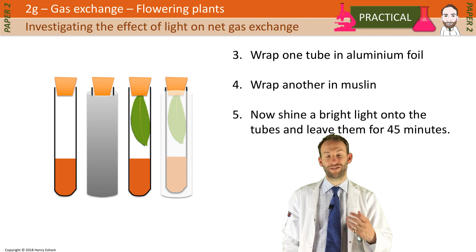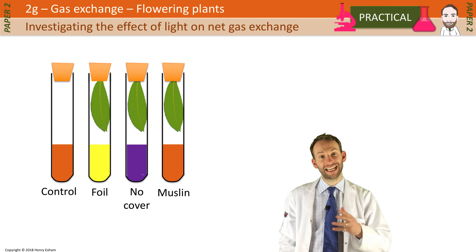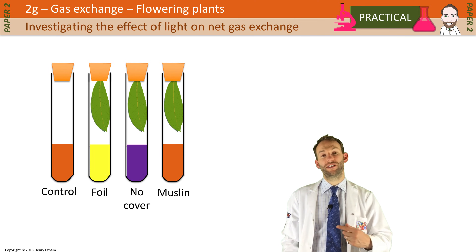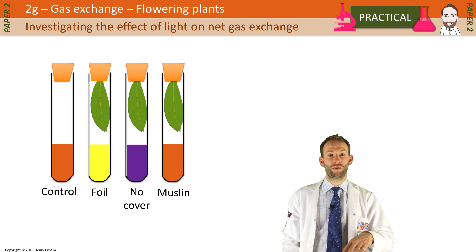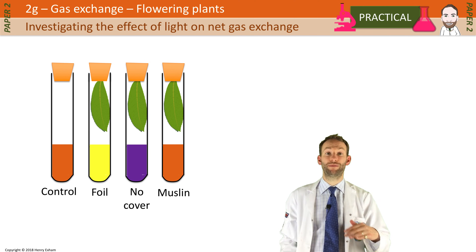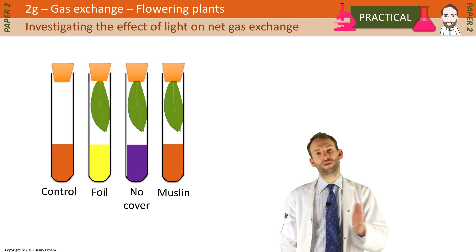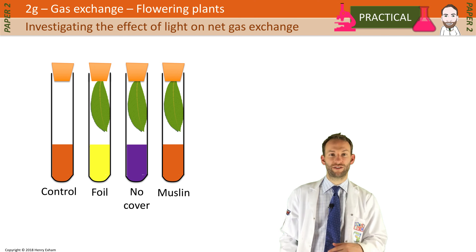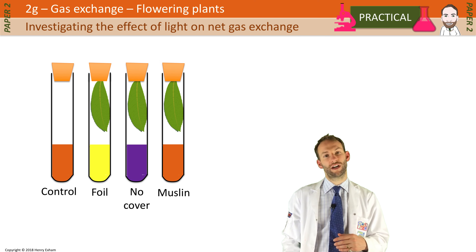You should be able to predict the results. The tube wrapped in foil will have no photosynthesis at all, but the plant is still respiring 24 hours a day, so it will actually be producing CO2. Therefore, the hydrogen carbonate indicator in that tube will go towards the yellow end of the colour spectrum.